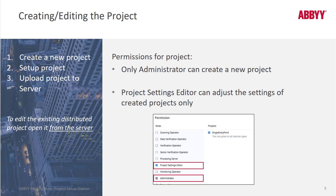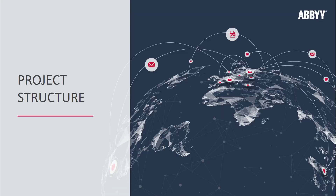The basic steps to getting going are to create a brand new project, configure it locally, and then upload it to the application server when you're ready to go into production. You can still edit the project, but you need to open it directly from the server.